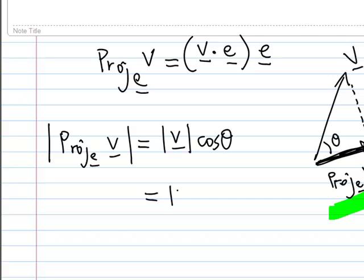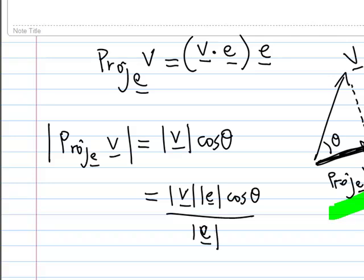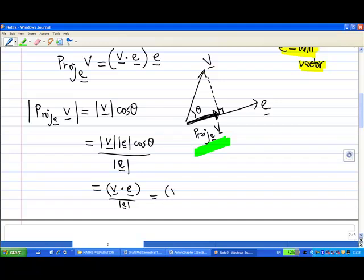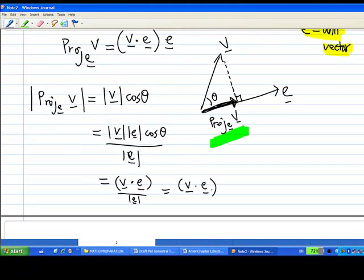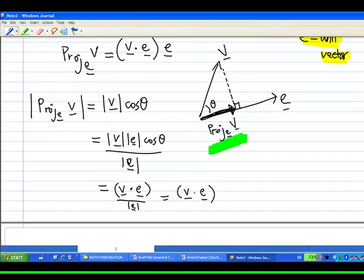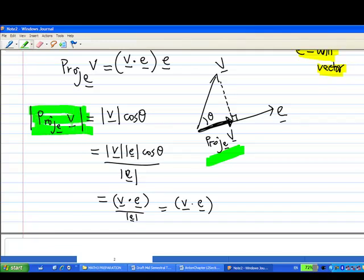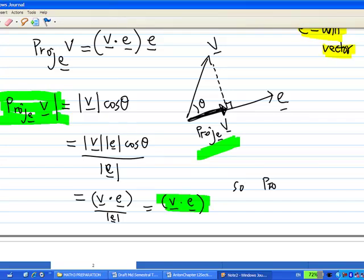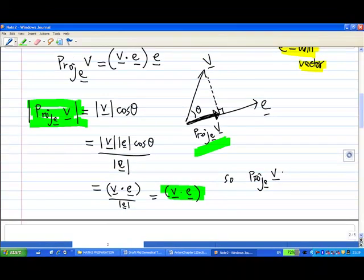We can simplify this as: length of v times length of e times cosine theta, divided by length of e. This is a common trick — the top is actually v dot e, and since e is a unit vector, length of e equals 1. So the length of the projection equals v dot e. Therefore, the projection of v on e is v dot e times e, since e is a unit vector.